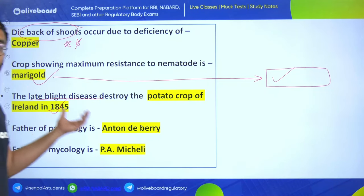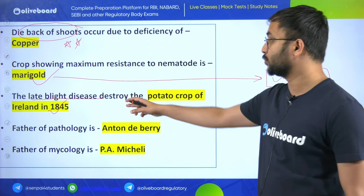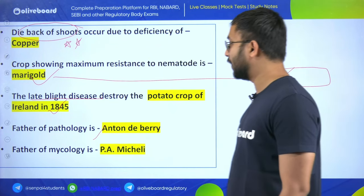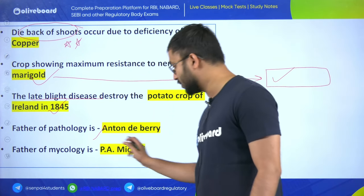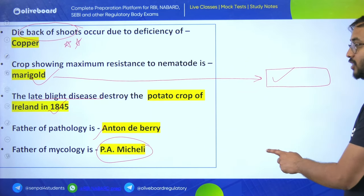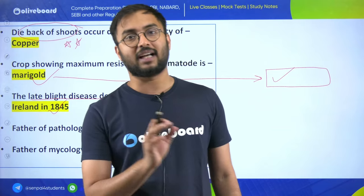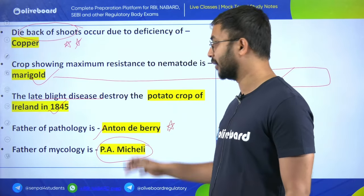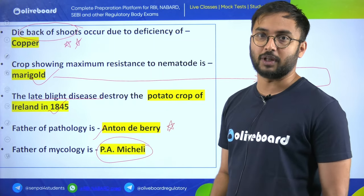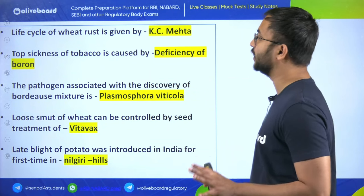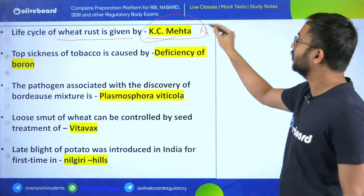Crop showing maximum resistance to nematode is marigold. Marigold is also a trap crop. The late blight disease destroyed the potato crop of Ireland in 1845, causing food scarcity. Father of pathology is Anton de Bary. Father of mycology is P.A. Micheli. Remember these for state agriculture exams, RAO and ADO exams - such questions will definitely come.